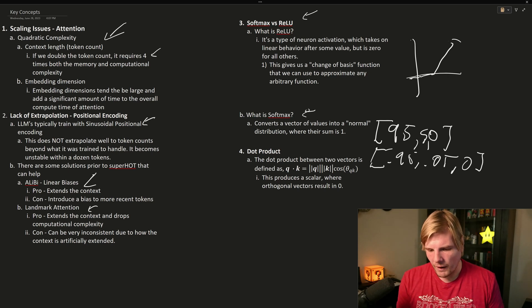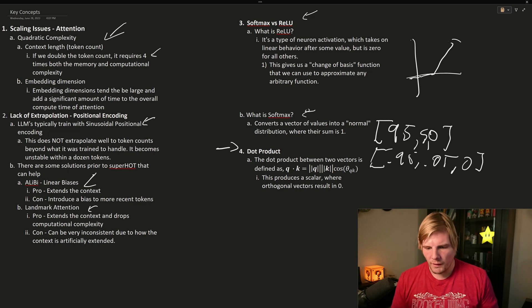And then finally, we have the dot product. The dot product measures the angular distance between two vectors. So if you have a vector q times a vector k, it's equal to the absolute value of q times the absolute value of k times the cosine of the angle between q and k. And this just produces a scalar, where if they are orthogonal vectors, it's zero.